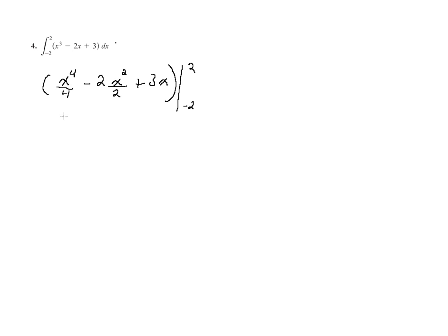I'm going to simplify this before evaluating. Really, the only simplification was that 2. So I have 1/4 times x to the fourth minus x squared plus 3x, evaluated from negative 2 to 2.